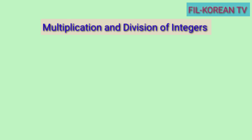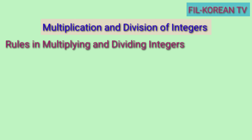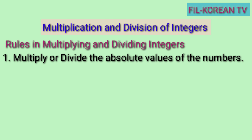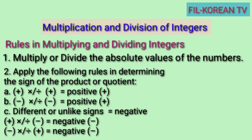Now let's proceed to multiplication and division of integers. The rules in multiplying and dividing integers are the same. First, multiply or divide the absolute values of the numbers. Next, apply the following rules in determining the sign of the product or quotient: positive times or divide positive — the answer is always positive; negative times or divide negative — the answer is always positive; and when we multiply or divide integers with different or unlike signs — the answer is always negative.